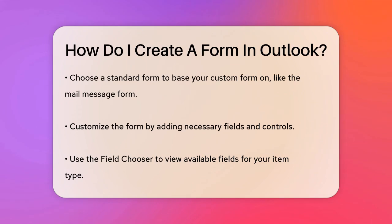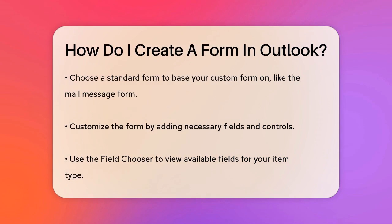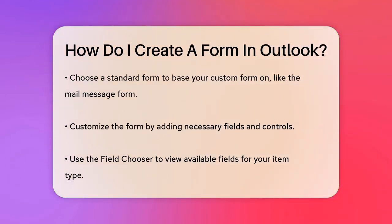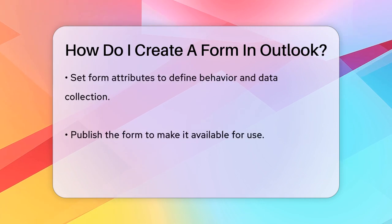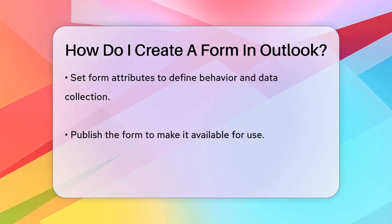Next, you'll customize the form by adding the fields, controls, and code that you need. You can use the field chooser to see all the available fields for the type of item you're working with. For instance, if you're working on an email message, you can click All Mail Fields to see all the fields available.